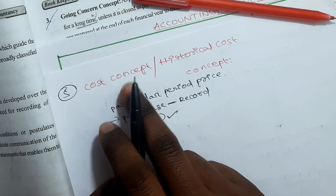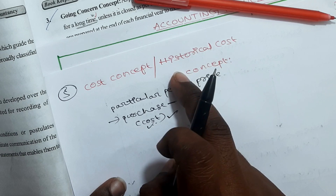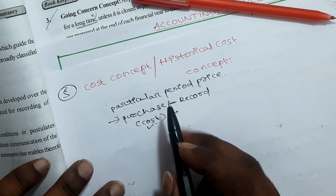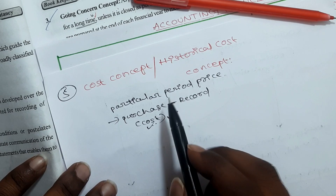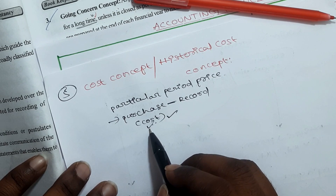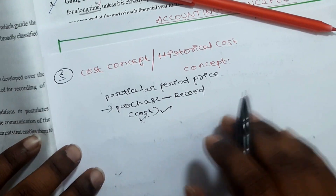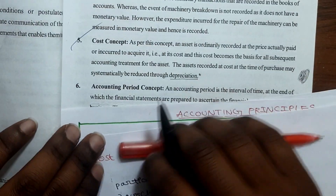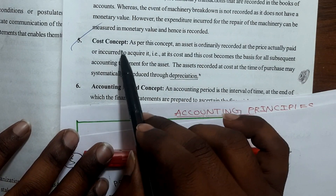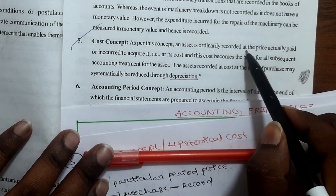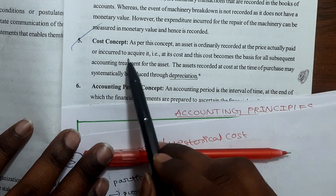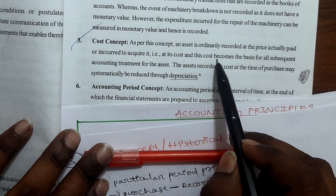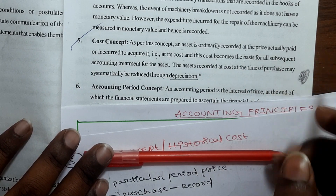We use the historical cost concept in accounting principles. As per this concept, an asset is ordinarily recorded at the price actually paid or incurred to acquire it — that means at its cost — and this cost becomes the basis for all subsequent accounting.